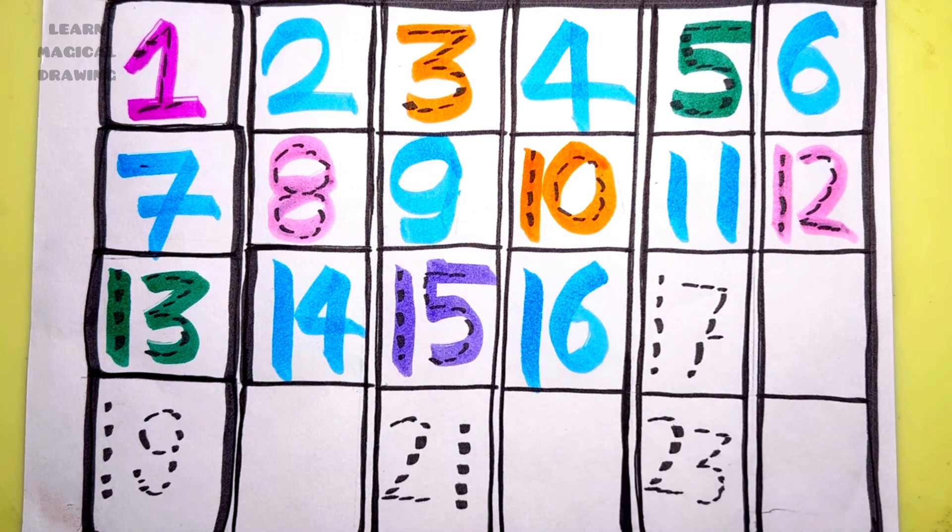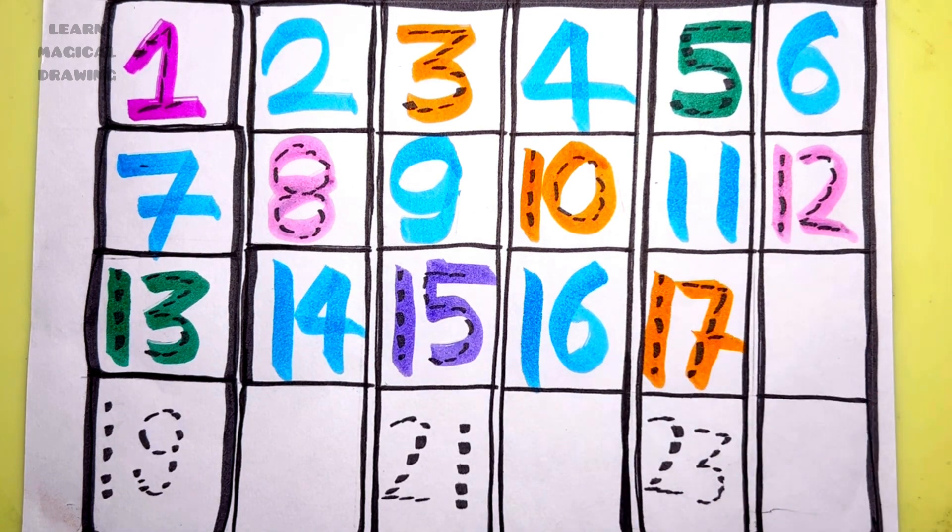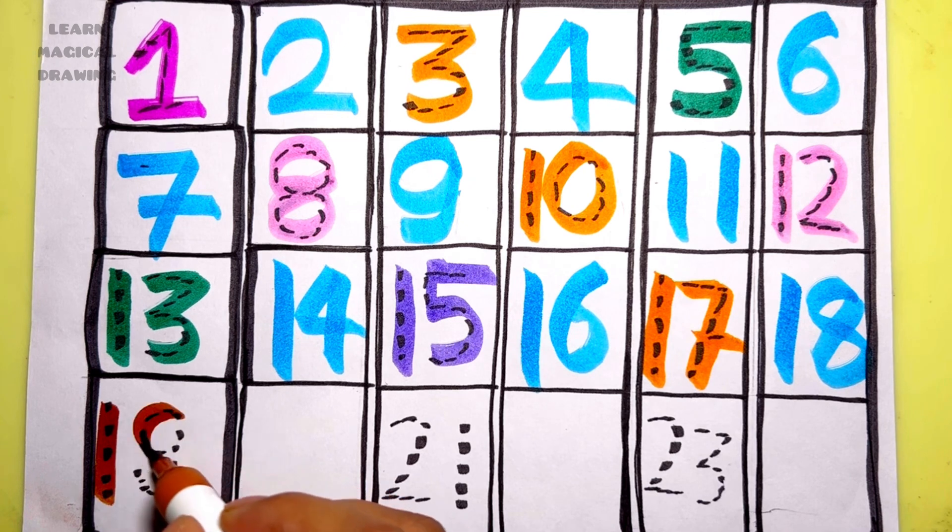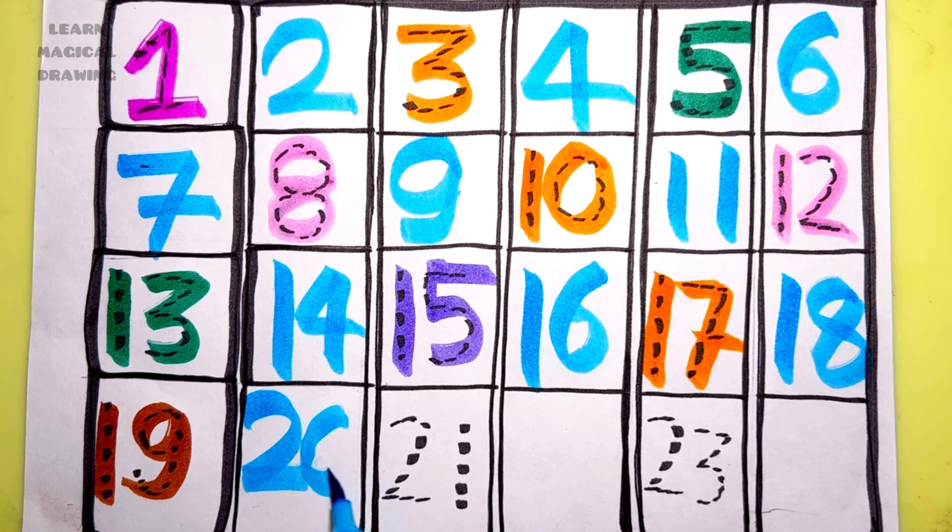One seven - seventeen, one eight - eighteen, one nine - nineteen, two zero - twenty.